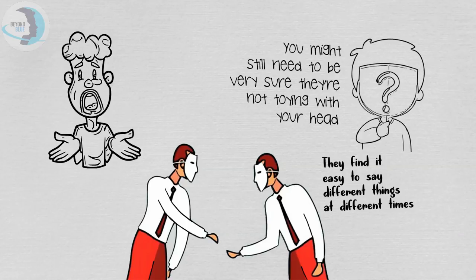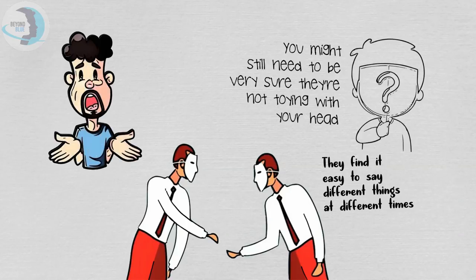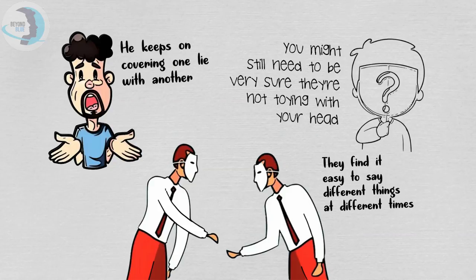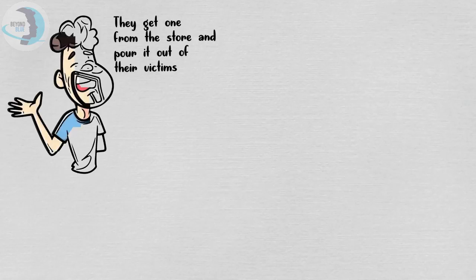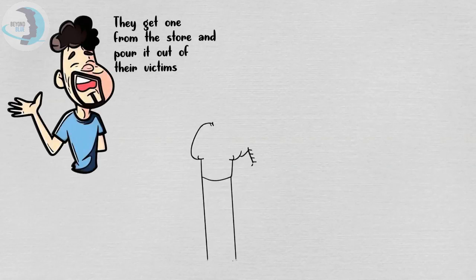A psychopath will give so many excuses just to prove why he didn't keep his promise. He makes sure this particular lie is covered with another lie, and just like that he keeps on covering one lie with another. They're masters at lying and they never lose. It's as if they have a bank where they store lies, and each time they get one from the store and pour it out on their victims.